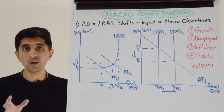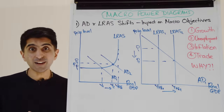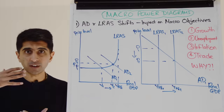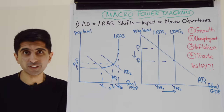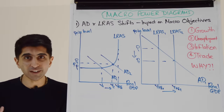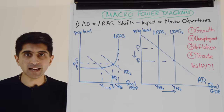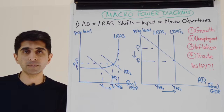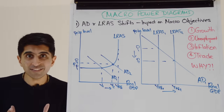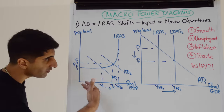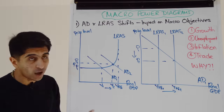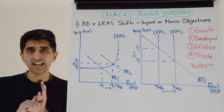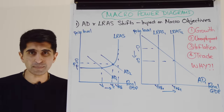Here we go with number one. Don't underestimate the value of these diagrams. We are looking at very basic shifts — shifts of AD, shifts of LRAS — but not just the simple shifts. The key is the impact on the macro objectives. These diagrams link to growth, to unemployment, to inflation, and to the trade position. You've got to say why. If we're shifting AD right, why is there an increase in growth, a reduction in unemployment, an increase in demand-pull inflation, and why in theory is there a worsening of the trade position?